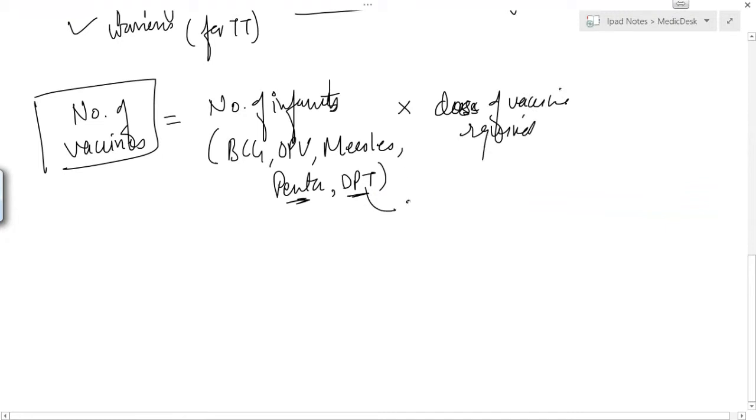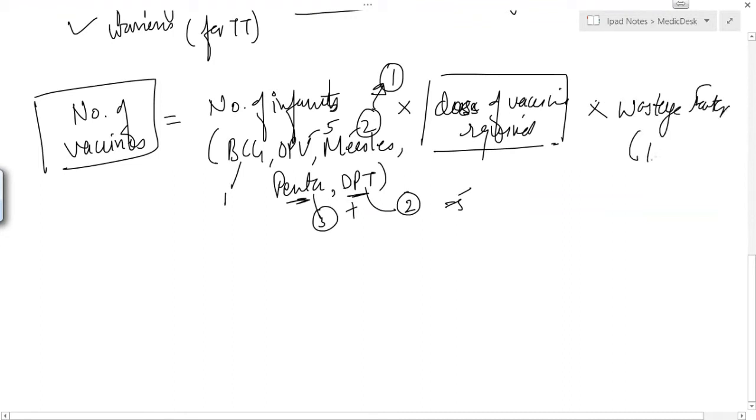Remember DPT-2 after penta-3 that would be 5, and BCG-1, OPV-5, measles-2. Primary immunization measles would be 1. Doses of the vaccine required into wastage factor, that is 1.33 and this is the constant.